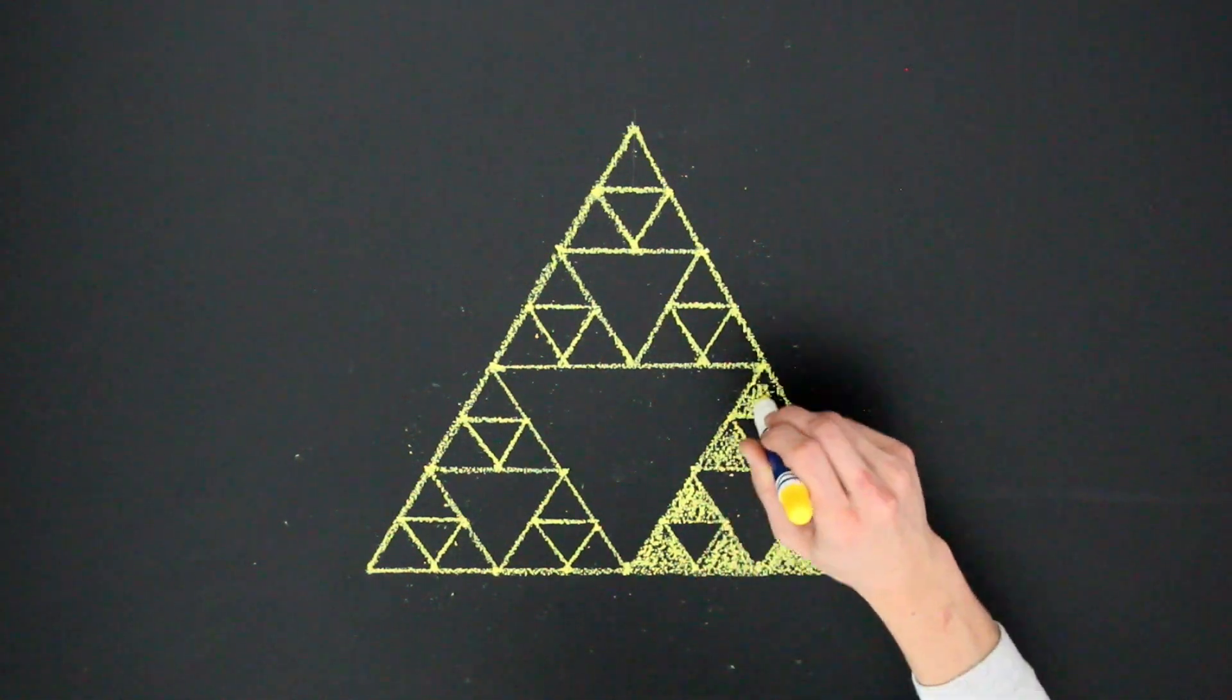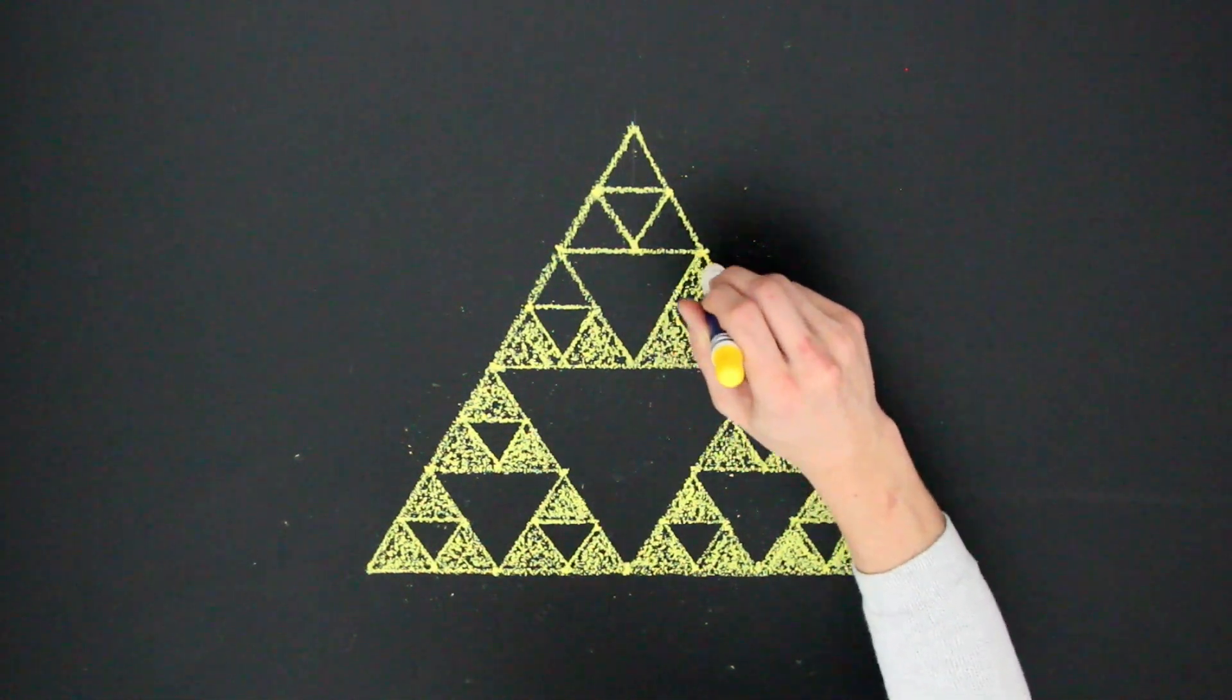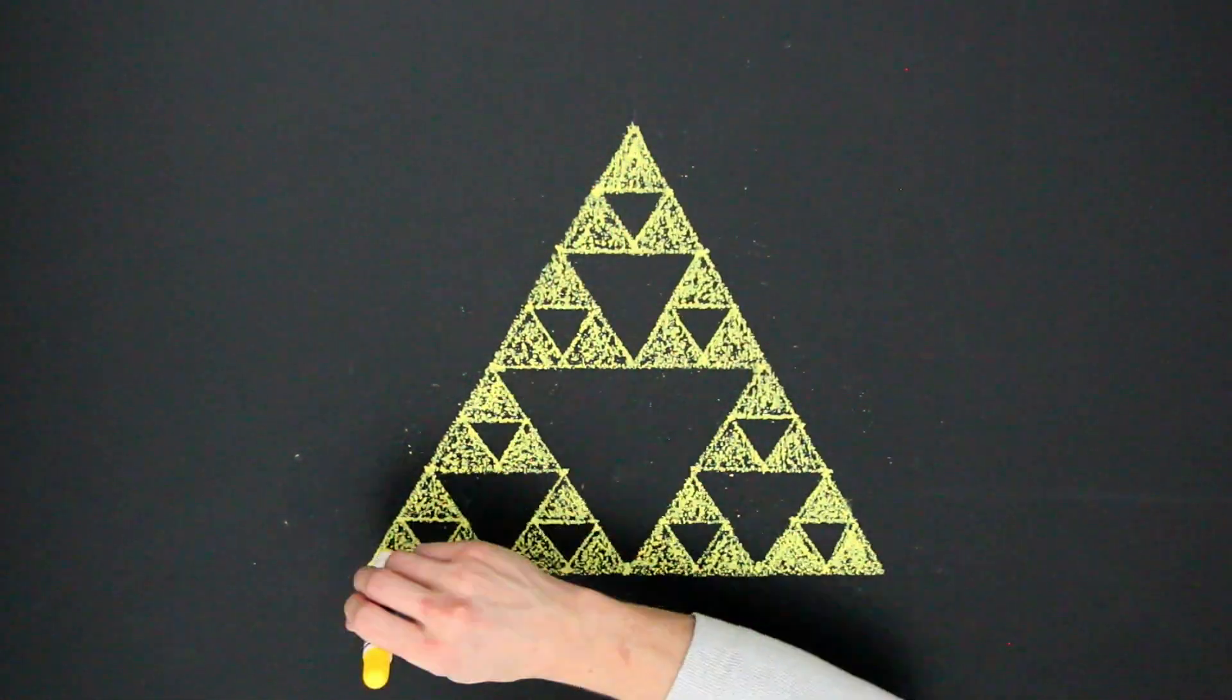The Sierpinski triangle is a geometric fractal made of equilateral triangles. What makes it a fractal? The pattern shape of the whole is the same pattern and shape as a smaller piece of it.